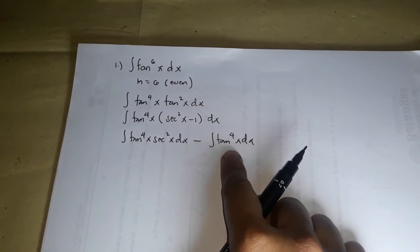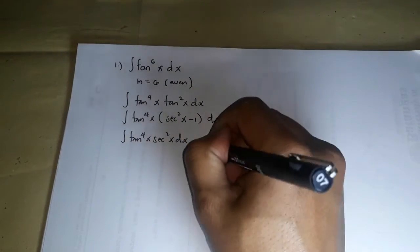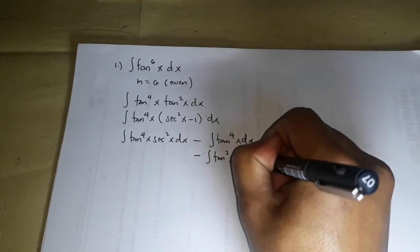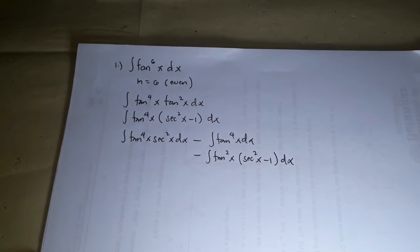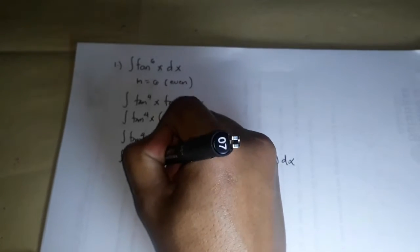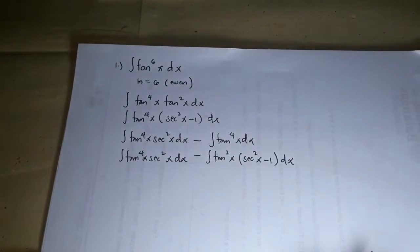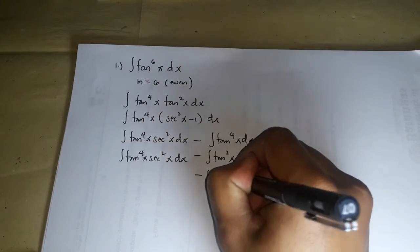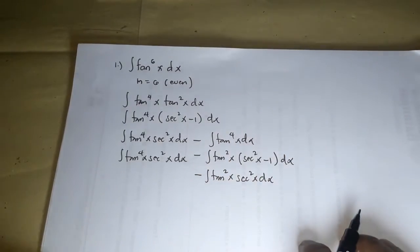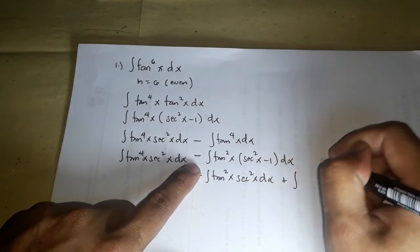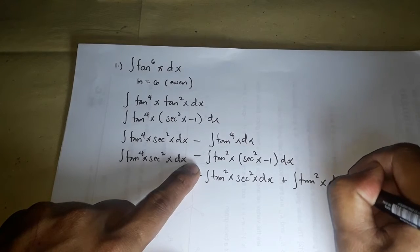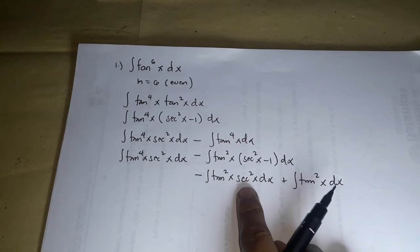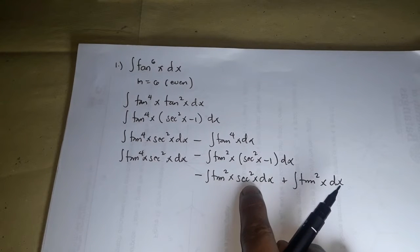For the second part — the integral of tangent to the 4x dx — we rewrite it as tangent squared x times tangent squared x, then replace the second tangent squared x using the identity as secant squared x minus 1. Introducing tangent squared x to each term gives us the integral of tangent squared x times secant squared x dx, plus the integral of tangent squared x dx. The second part again has tangent x with secant squared x dx together, which is already integrable.